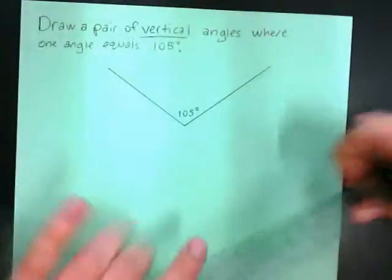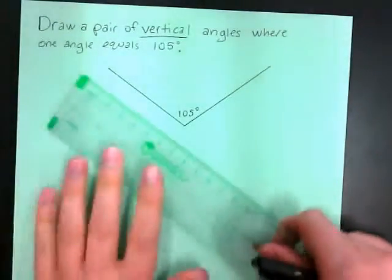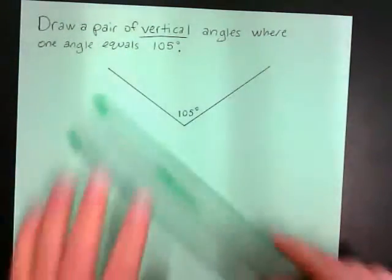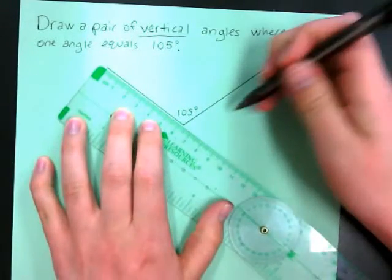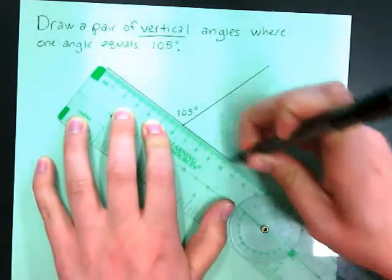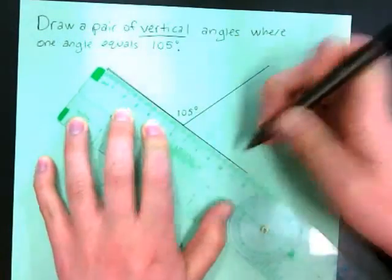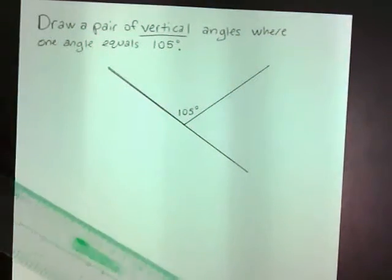So what I'm going to do is I'm going to take my angle ruler, and now I'm just going to use it as a ruler. I'm going to take this line and extend it a little farther down. So I extend it that way.